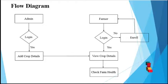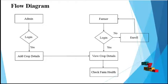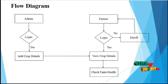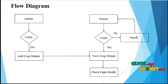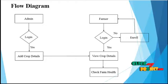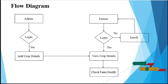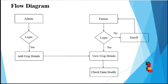Admin can also check the crop details they have added, including crop database, crop management, irrigation management, and fertilizers. The different categories can be viewed by both admin and farmer. Additionally, the farmer can enter their own farm's crop name, location, hybridity level, and check whether they need water, pesticides, or fertilizers.